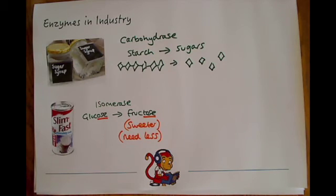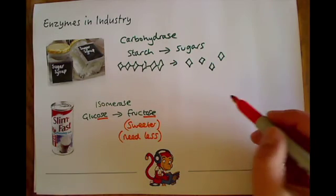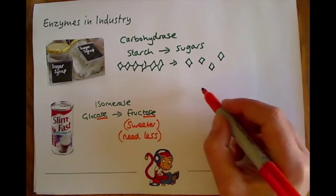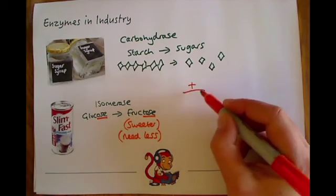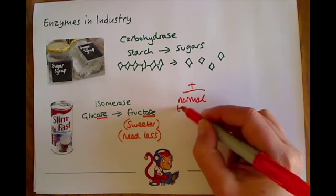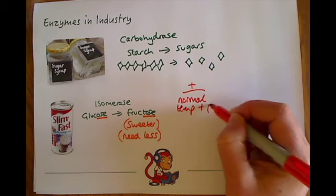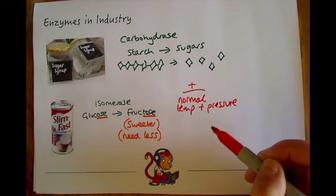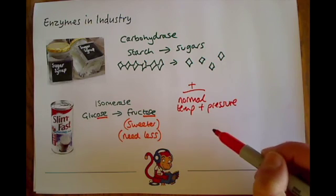We just need to discuss why using enzymes in industry is good. First of all, they allow reactions to occur at normal temperatures and pressures. So if you put enzymes into a reaction, it will help speed them up, but you just have to use the normal temperature and pressure. That means you don't have to put loads of heat and energy into the process.